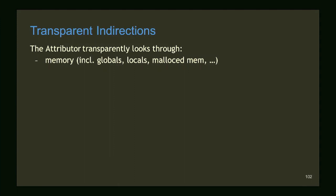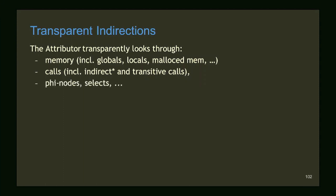The Attributor transparently looks through memory: if you store to a static global and load from it, we try to argue what you will load, and if we can, we look through it — you'll never see the store/load, just what was stored. It handles locals, malloc memory, pointer capture, aliasing pointers, and interleaving stores by other threads. It also looks through calls: to determine what a value is, we might go through memory, call sites, files, and selects — all done for you automatically.